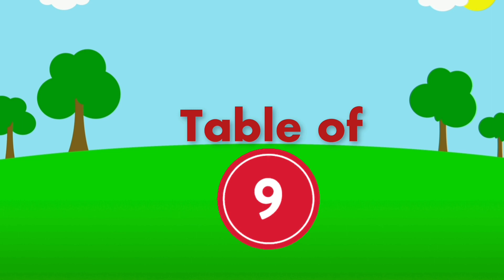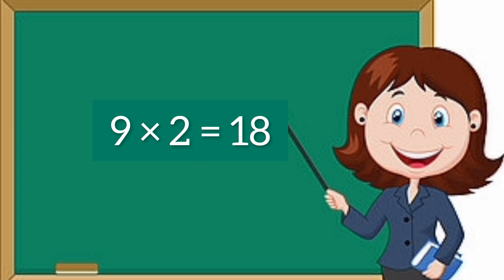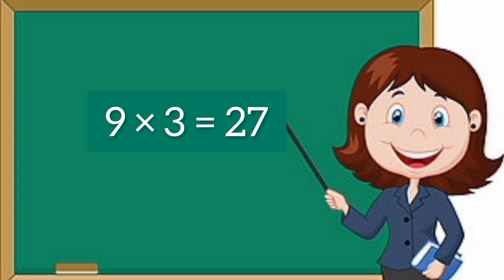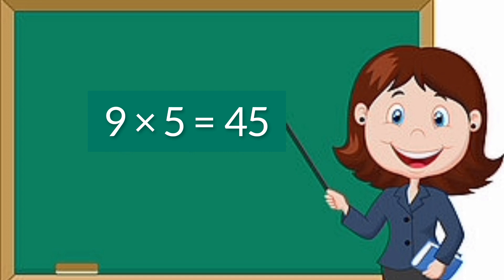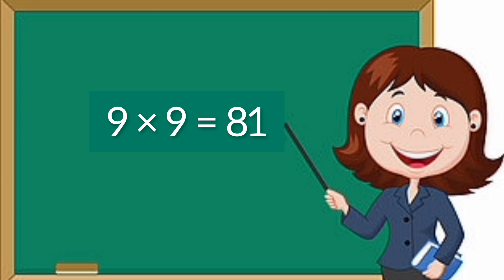Table of 9. 9×1=9, 9×2=18, 9×3=27, 9×4=36, 9×5=45, 9×6=54, 9×7=63, 9×8=72, 9×9=81.